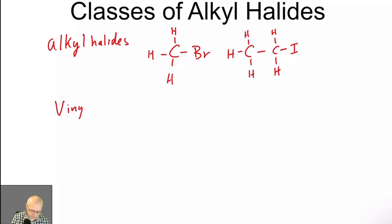Vinyl halides. Vinyl halides are attached directly to carbon-carbon double bonds. There's a vinyl bromide. And here is, say, a vinyl chloride, for example.